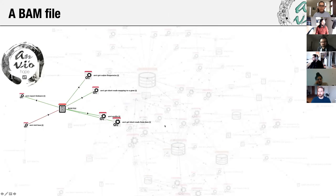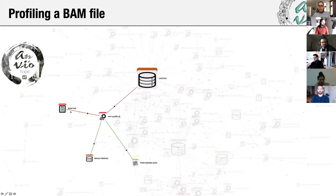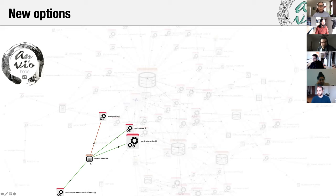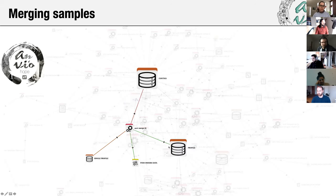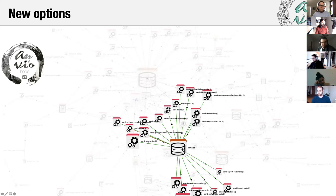For instance, if you have a BAM file, you enter this network from here and use an Amvio program to profile that BAM file — that would yield a profile database. Once you have a profile database, you have other options. If you have multiple of them, you can use another Amvio program to merge them together to get a merged profile database, and then you'd have all these options to do things with.